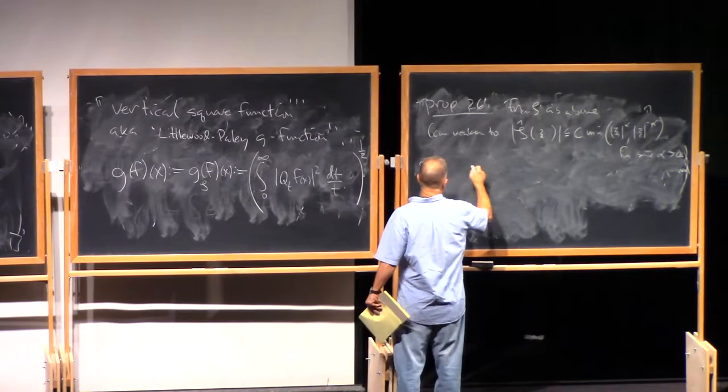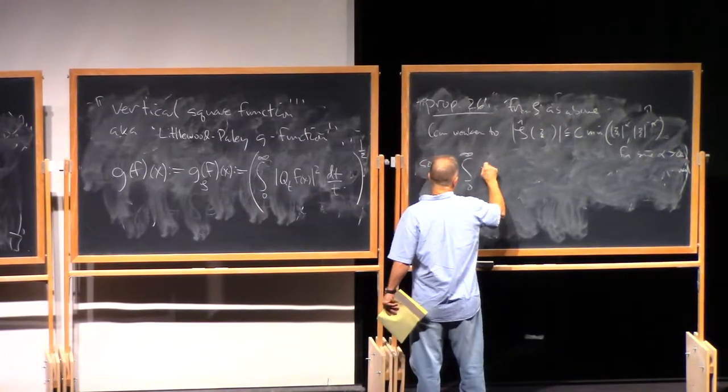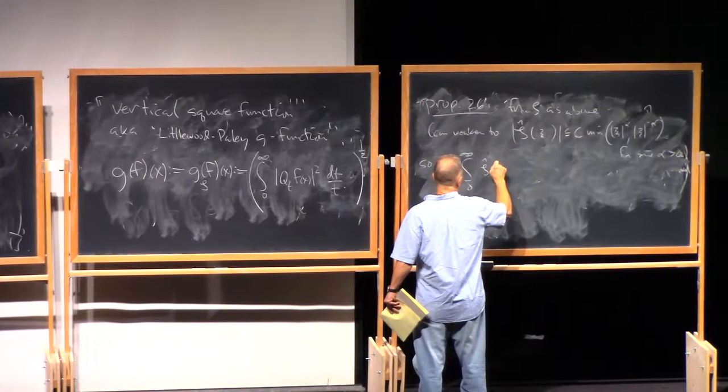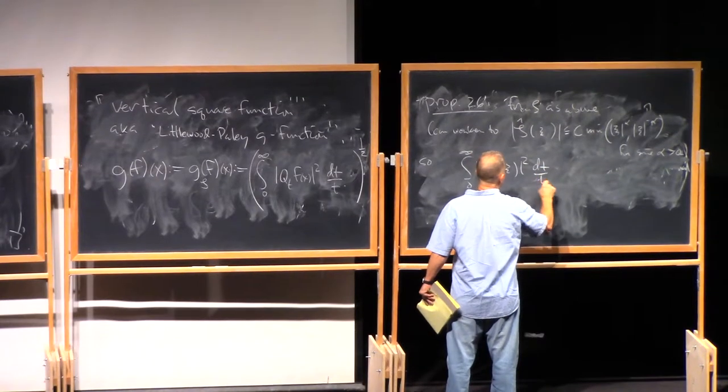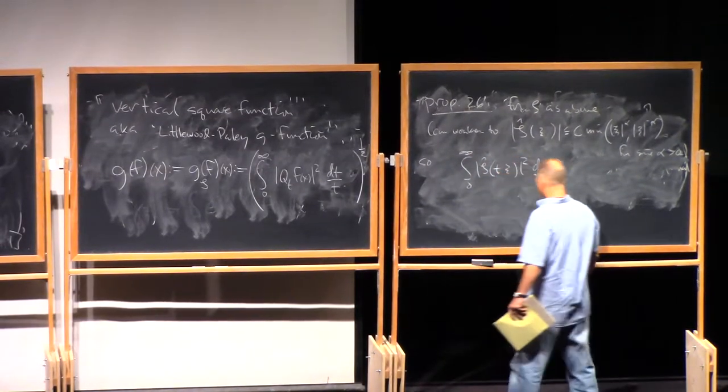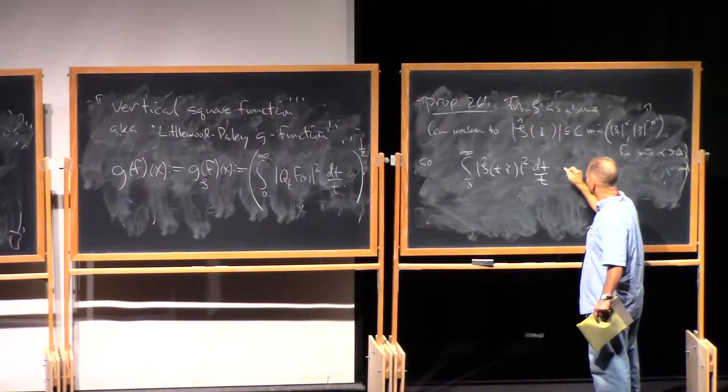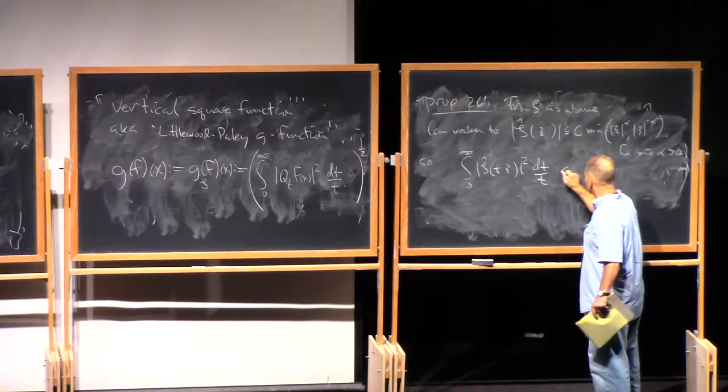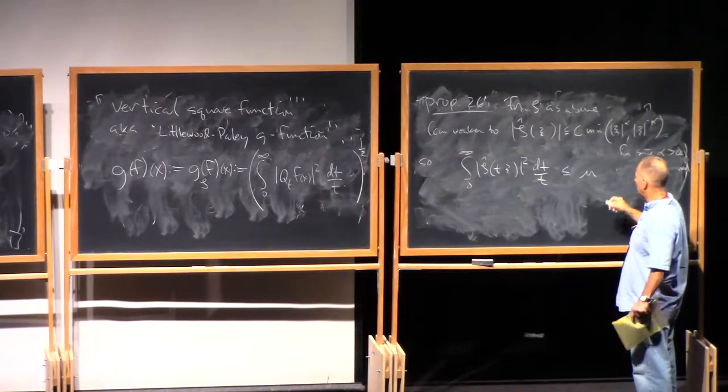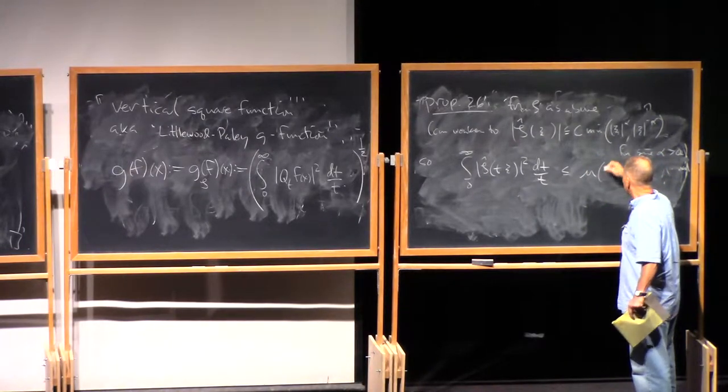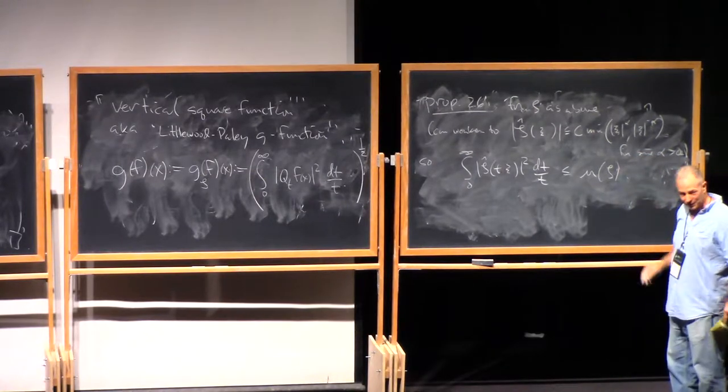So, in other words, integral of zero to infinity of zeta hat of t xi squared dt over t, which, this is gonna be less than or equal to, say, some bound mu of zeta uniformly in xi.